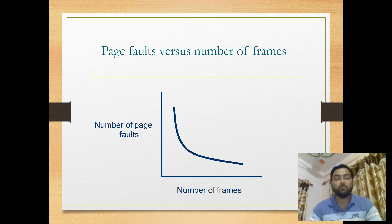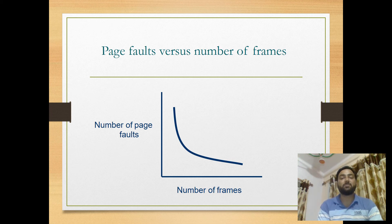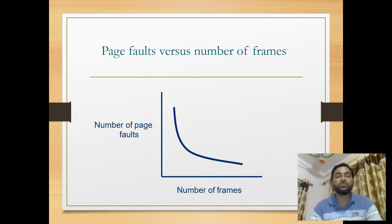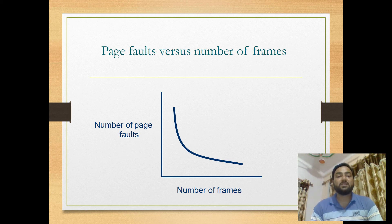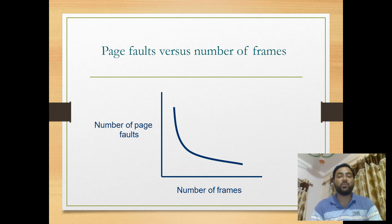A page fault is the condition where a process under execution requires a particular page that is not present in physical memory. When the required page is not available in physical memory, that condition is known as a page fault, and we need to perform page replacement to bring the desired page from secondary storage into main memory.